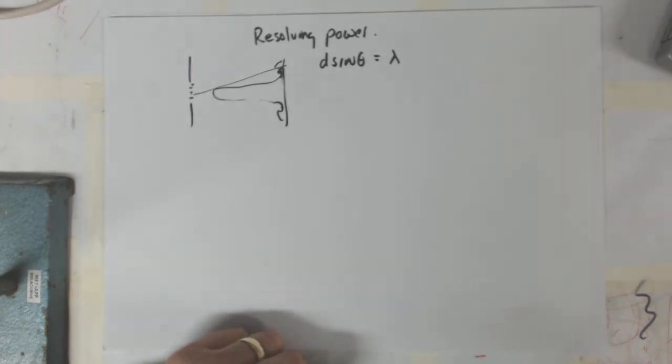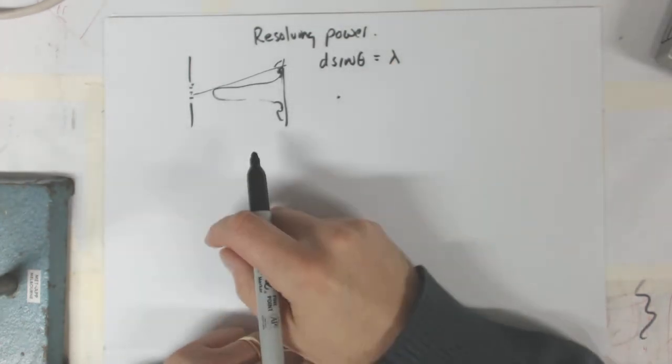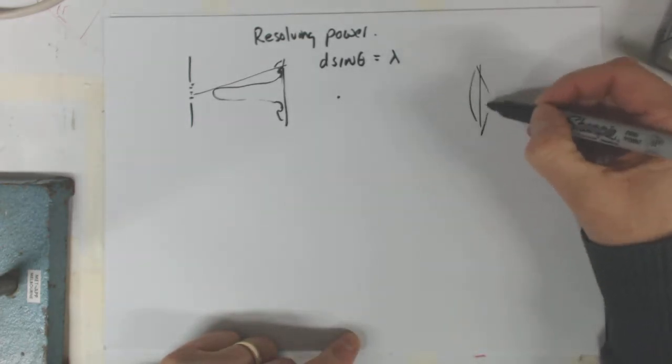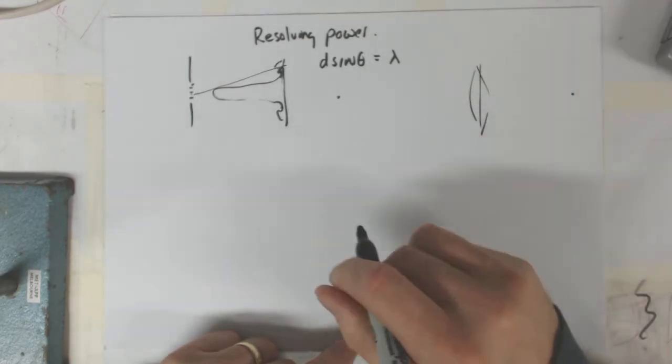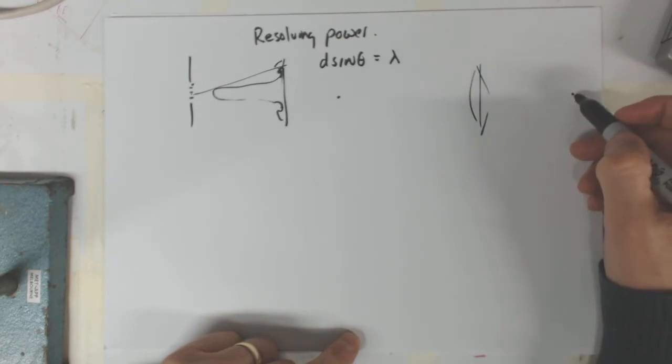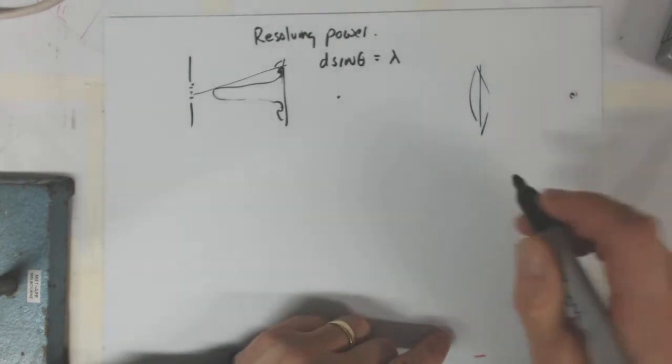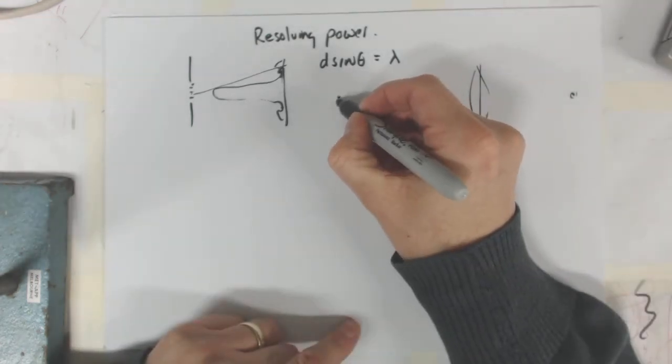So what's that got to do with resolving power? Well, it's got a lot to do with resolving power because if you've got this point source or point object and you put it through a lens or something like that and you've got its image here, what you'll see is that its image actually is not a point but a diffraction, a series of diffraction rings with a central maximum, a little bit of a minimum, then a maximum.